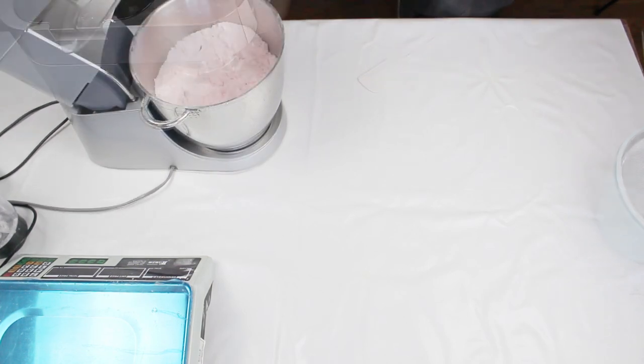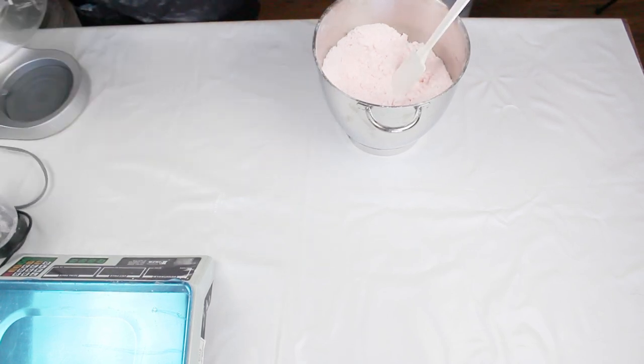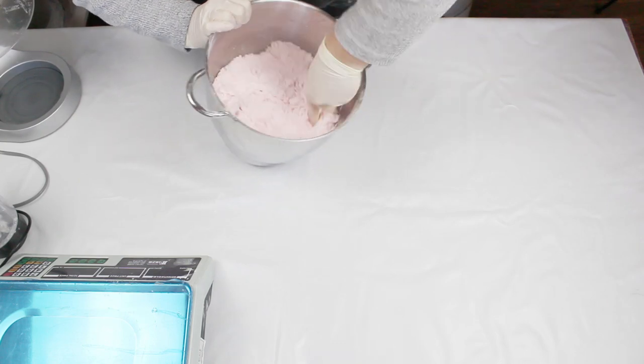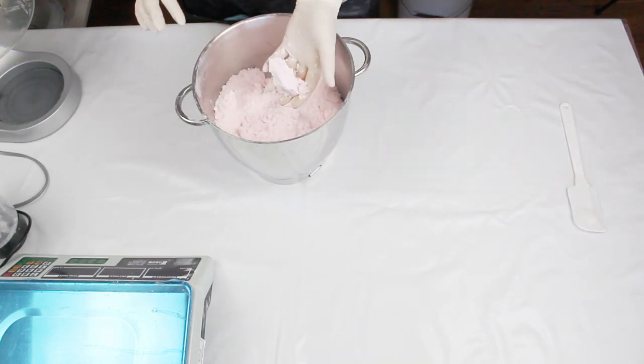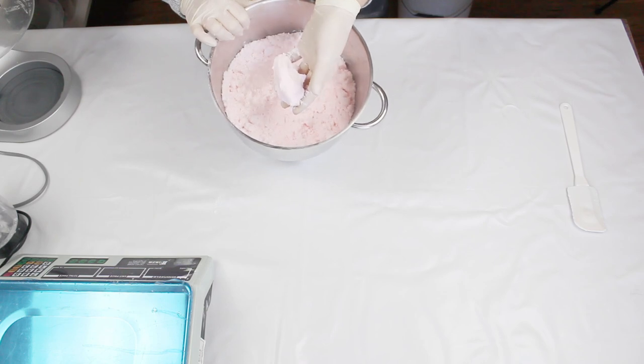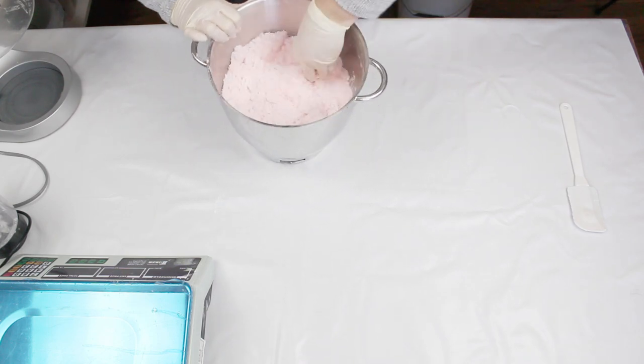Once citric acid is fully incorporated into the mix, I scrape the sides and the bottom, making sure there are no clumps or any uncolored spots and check for texture. It sticks together when dropped and doesn't stick on the gloves.